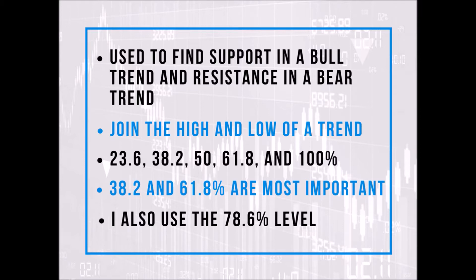All the software these days does it for you. For me, the most important levels are the 38.2% and the 61.8%, followed by the 23.6% and then the 50%. Note that I also use the 78.6% Fibonacci level on my charts — it's less important than the others, but I like to keep an eye on it. It works well as a target, although less so as support and resistance. Once that level has been broken, remove the Fibonacci lines from your chart and look to redraw them.